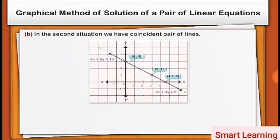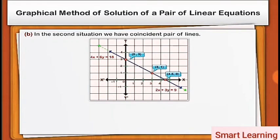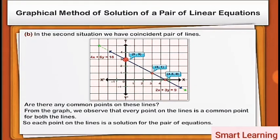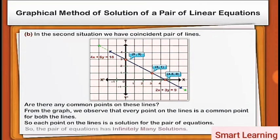In the second situation, we have a coincident pair of lines. Are there any common points on these lines? From the graph, we observe that every point on the lines is a common point for both the lines. So, each point on the lines is a solution for the pair of equations. So, the pair of equations has infinitely many solutions.